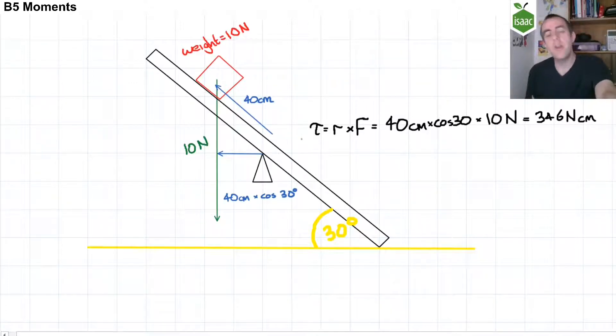It is always helpful to draw a diagram in this sort of problem, because if you are given an angle, it could be given to the horizontal, as it has been in this case, or it could be given to the vertical. And if your angle is given to the vertical, then you would have to use the sine of the angle.